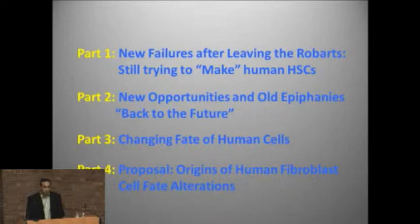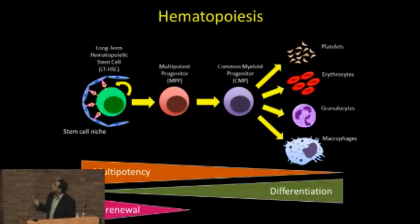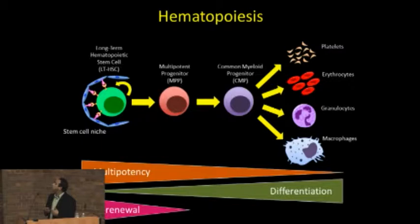My first love is hematopoiesis. The beauty of this system is that it's defined in nice stepwise components, with markers for each step. As cells go from stem cells to mature cells, specific markers delineate exactly the stages. More importantly, there are functional assays that distinguish between a stem cell fraction versus a progenitor that becomes more and more committed down the lineage. It's a beautiful system to work with.